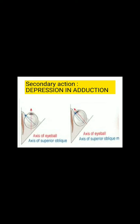This diagram depicts the importance of the angle between the visual axis and the angle of insertion of the superior oblique. In the first case, as you can see, when the primary angle is 51 degrees between the superior oblique and the visual axis, the main action of the superior oblique is intorsion.